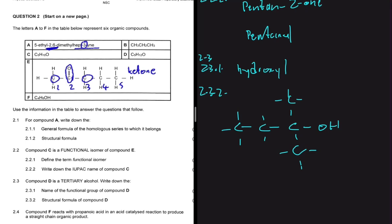If it's bonded to two, that's secondary. If it is bonded to one, that's primary. So we can see that this carbon that is bonded to OH is also bonded to one, two, three other carbons. So that would make it a tertiary alcohol.